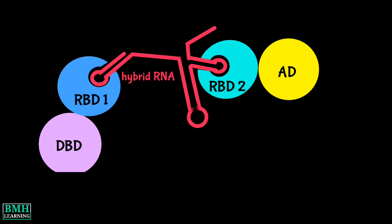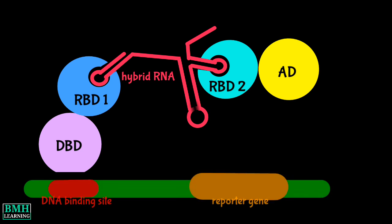When this tripartite constituent forms at the promoter, the reporter gene is turned on. And the expressed reporter products can be recognized by simple biochemical or phenotypic assays.